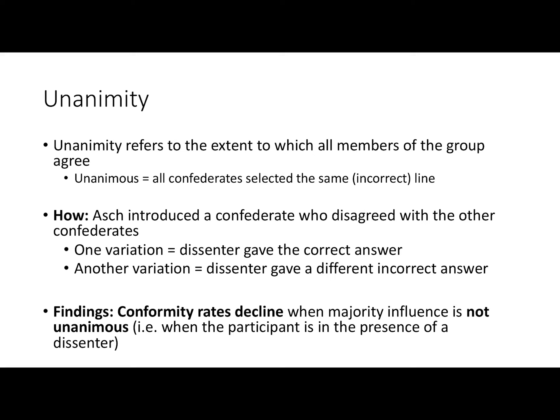The next variable Asch investigated was unanimity — whether the group was unanimous. When talking about unanimity, we're referring to the extent to which all members of the group, the confederates, agree. Were they all in agreement about which line matched the target line? Asch investigated this in a couple of ways.